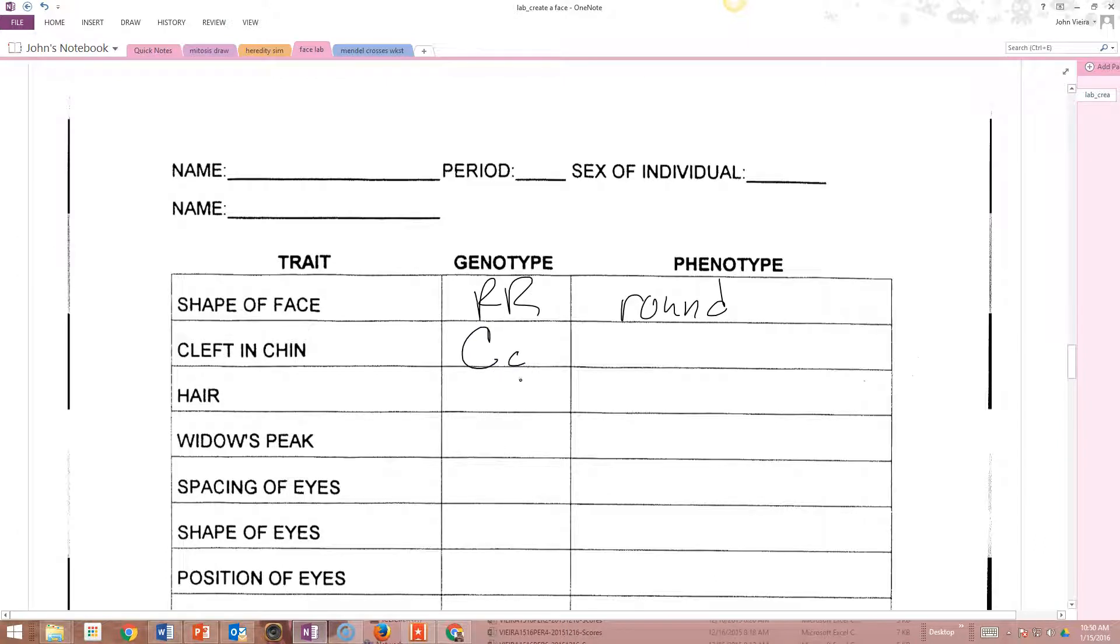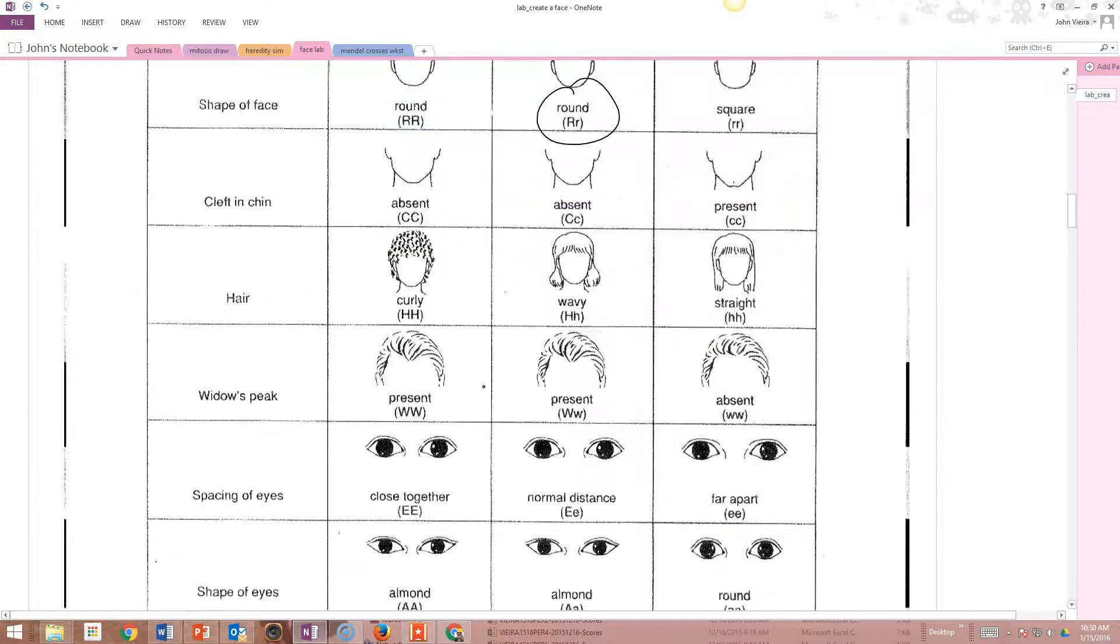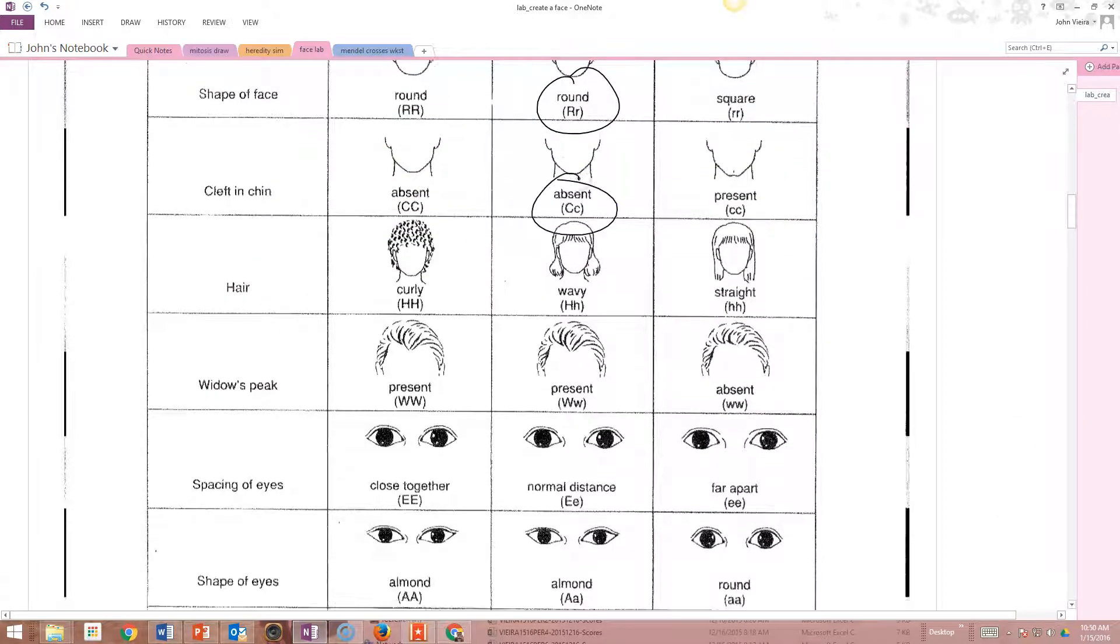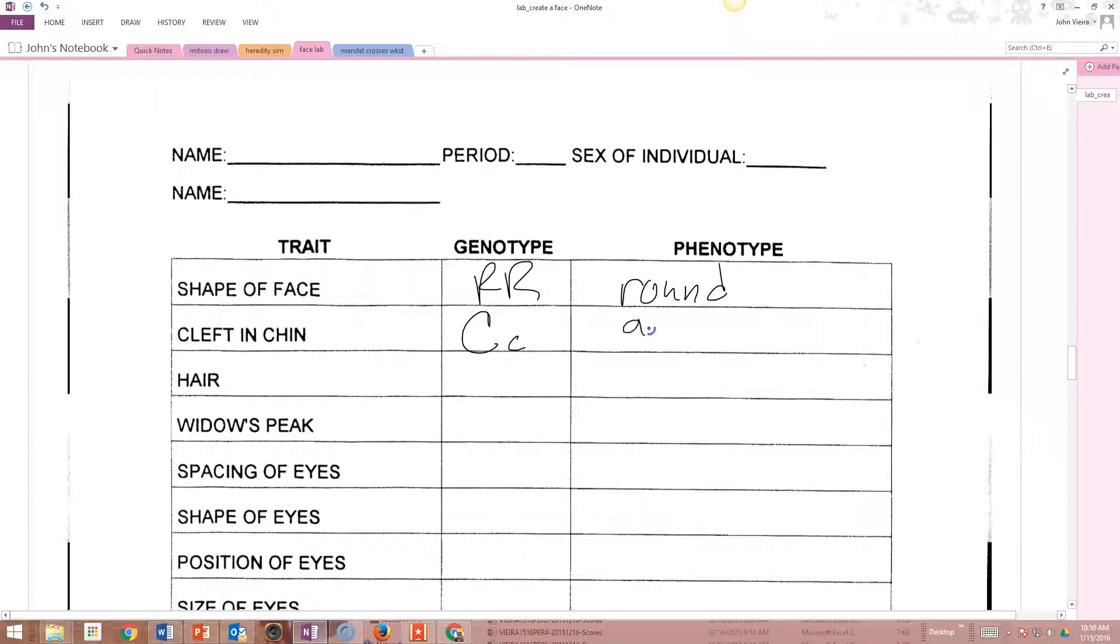So if I got a heads and a tails for cleft in the chin, I'd look back up here and be like, well, what is that? Oh, that means it's absent. Okay, absent. You're going to fill this out.